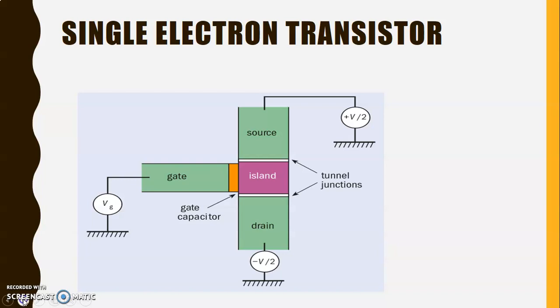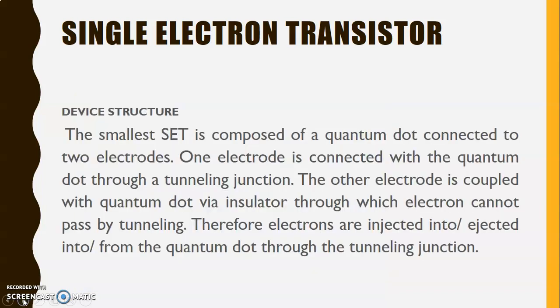The device structure: the smallest single electron transistor is composed of a quantum dot connected to two electrodes. One electrode is connected with the quantum dot through the tunneling junction. The other electrode is coupled with quantum dot via insulator through which electron cannot pass by tunneling. Therefore electrons are injected into or ejected from the quantum dot through the tunneling junctions.